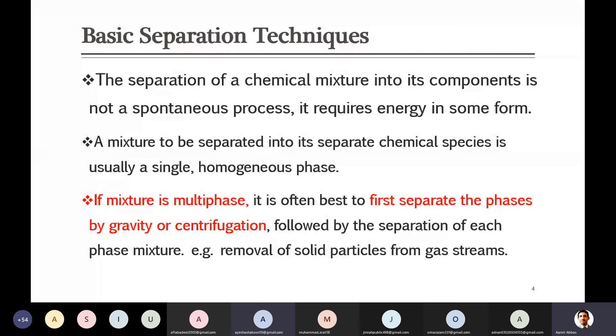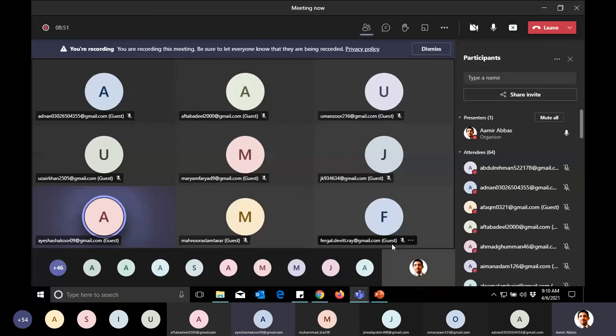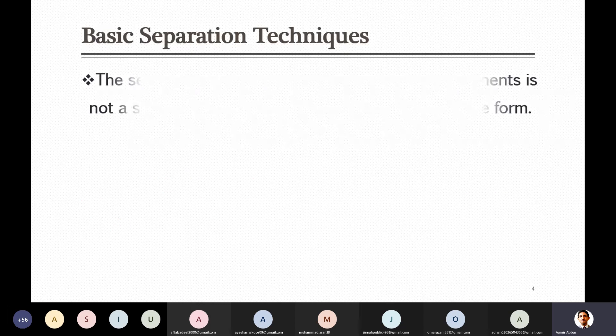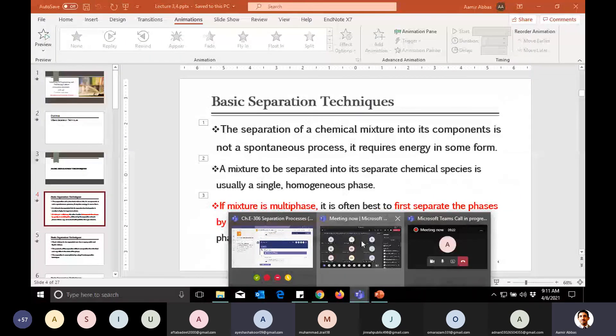If some mixture is multiphase, it means there are more than one phases. For example, if you have a light gaseous stream that contains some solid particles, in that case there are now two different phases. Although they are coming together to some equipment where you want to make separation, when there are different phases they can be separated based on simple forces - for example gravity or centrifugation.